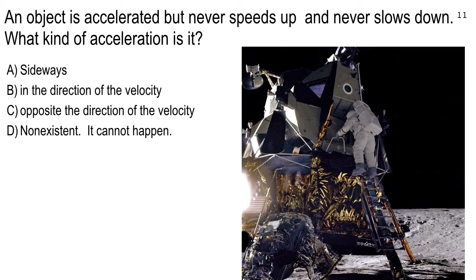We have a whole range of answers here. And like the previous class, the correct answer — sideways — is the least populated answer. If something doesn't speed up, there are no newtons of force in the direction of motion. If it doesn't slow down, there are no newtons of force in the opposite direction. So if it's getting acceleration but neither speeds up nor slows down, it's not getting any newtons forward or aft — it's got to be sideways newtons.